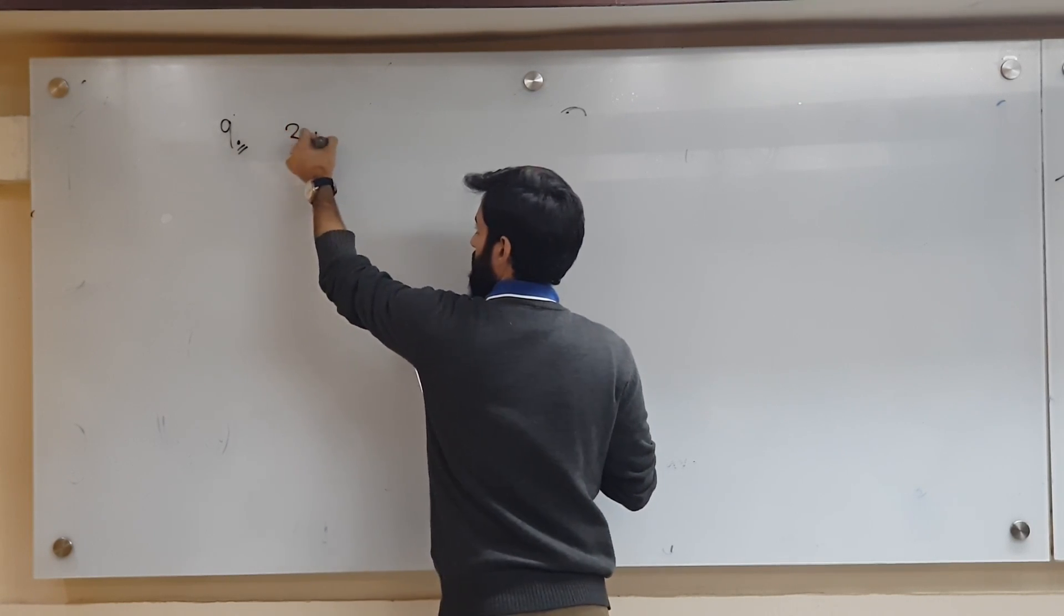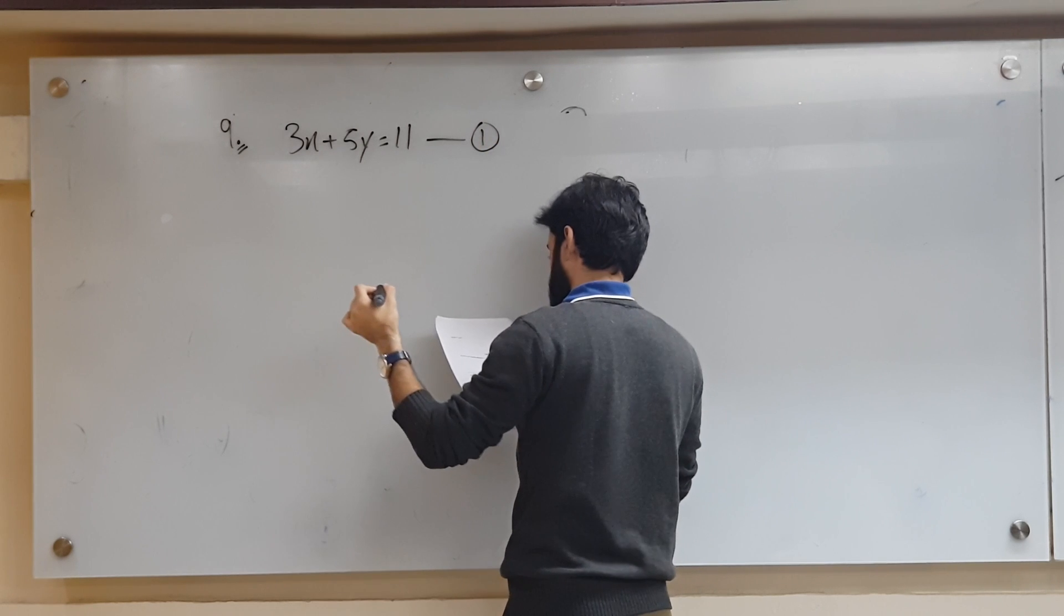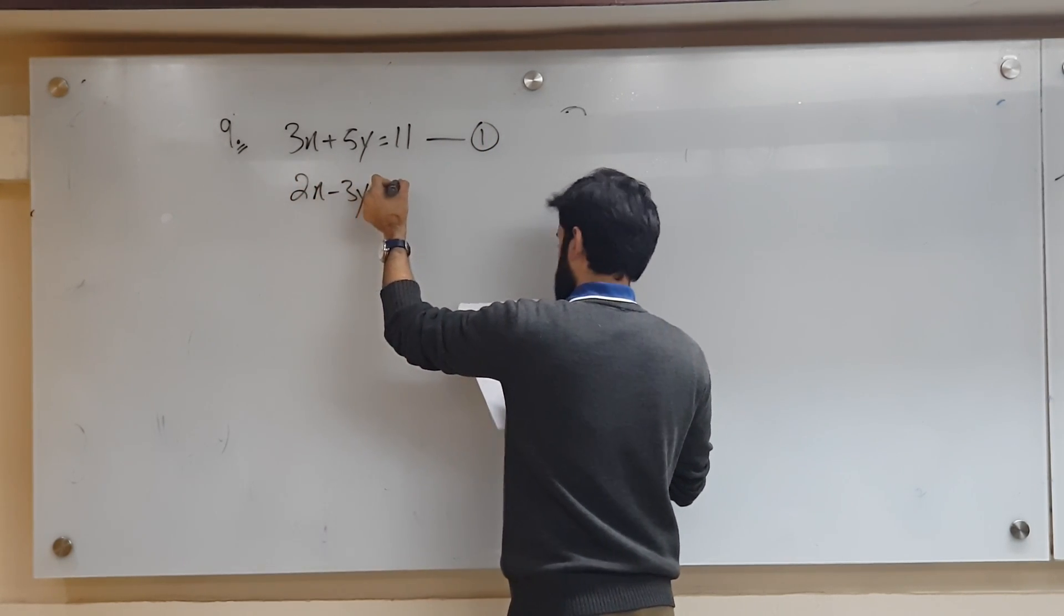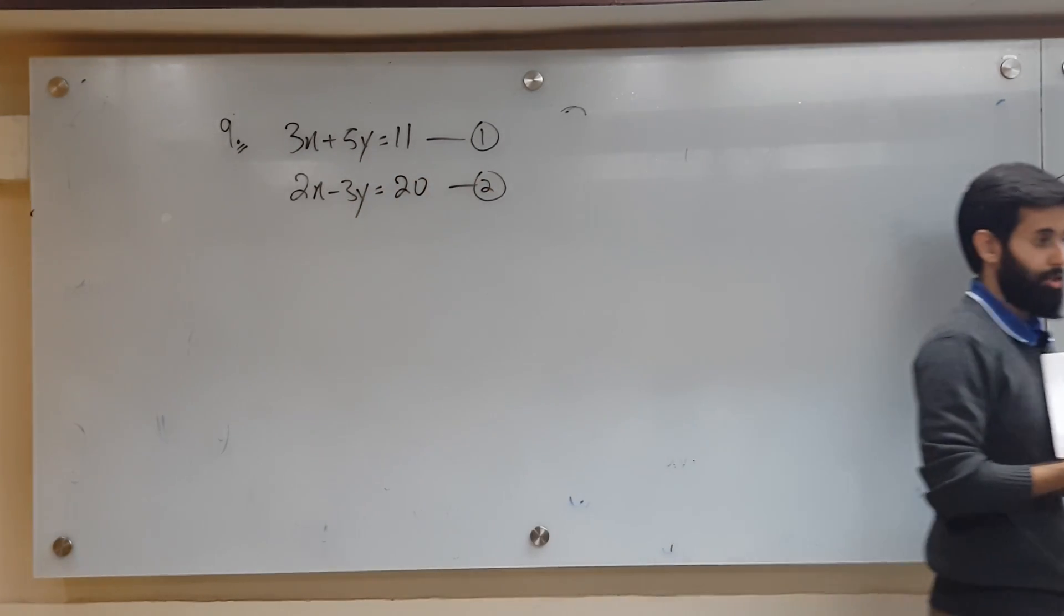And you're given 3x plus 5y equals to 11, here's equation number 1, 2x minus 3y equals to 20, here's equation number 2, pay attention.